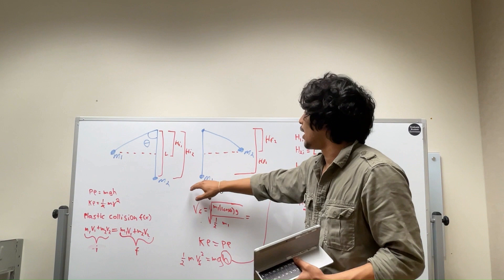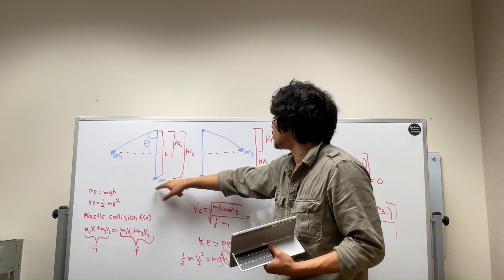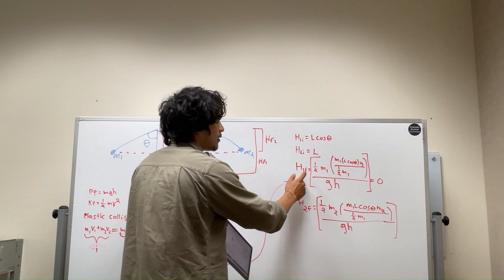However, if mass 1 is greater than mass 2, then mass 2 will go up at a greater height, while mass 1 will also go up with it, just a slight bit. And so it will slightly change our variables, it will slightly change our outcome a little bit.